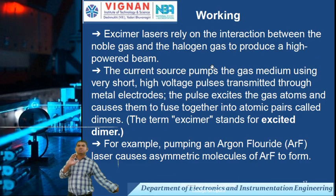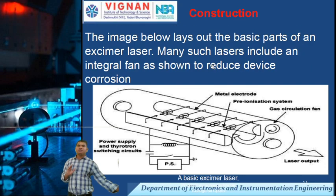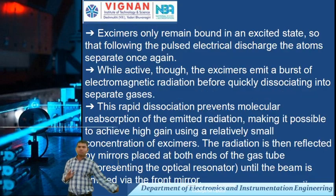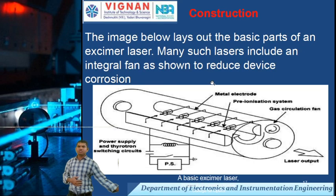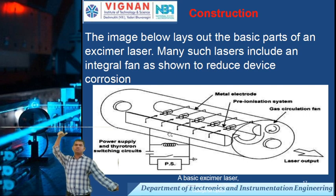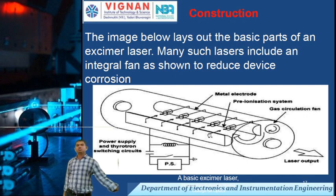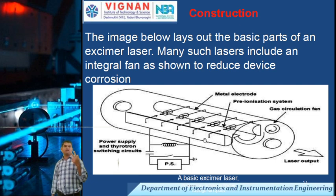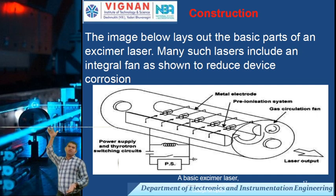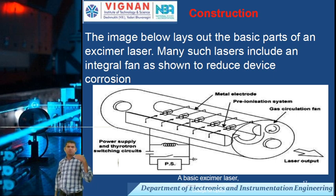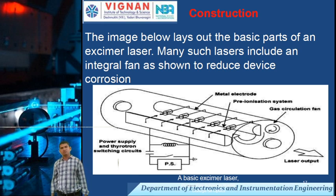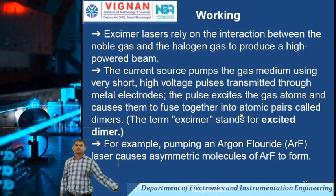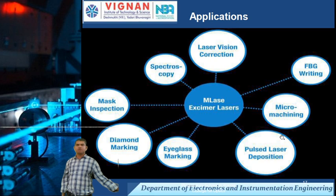To summarize the working of the excimer laser: when an external supply voltage is applied to the tube containing the combination of two gases, the atoms are excited from the lower energy level to the higher energy level. When they fall back from the higher level to the lower level, they emit radiation, which gives us the laser beam output. This completes the discussion on excimer lasers.